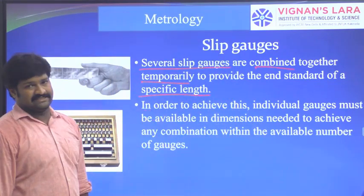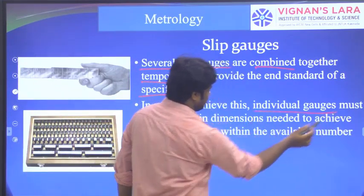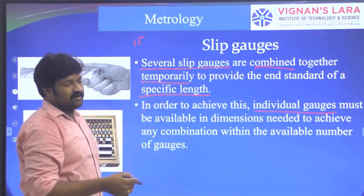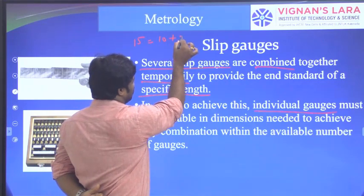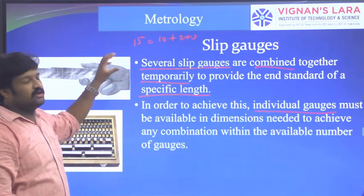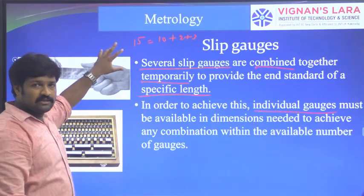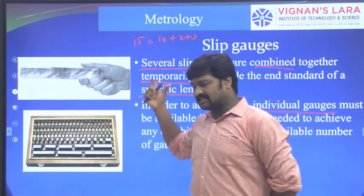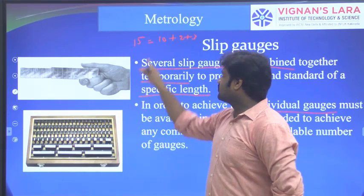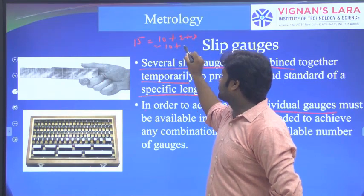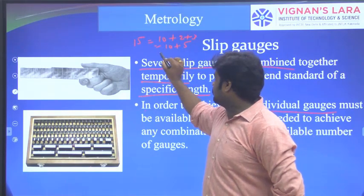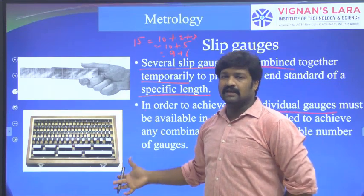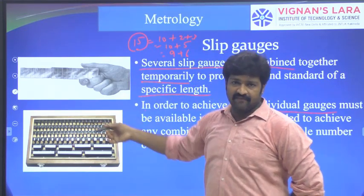Individual gauges must be available in the required dimensions. For example, to achieve 15 mm, the set should contain blocks of 10, 2, and 3. If a particular block is not available, we adjust with an alternate combination — for instance, if 10 is not available, we can use 9 plus 6. We need to maintain the final required length using the available gauges. The required combination should be achieved with the available number of gauges in the set.